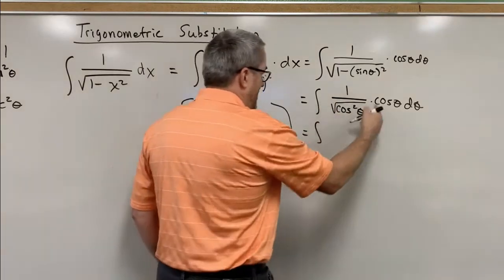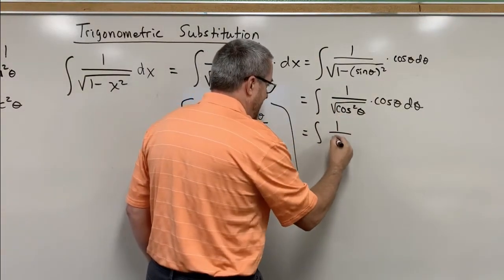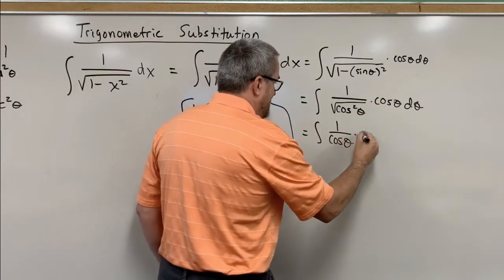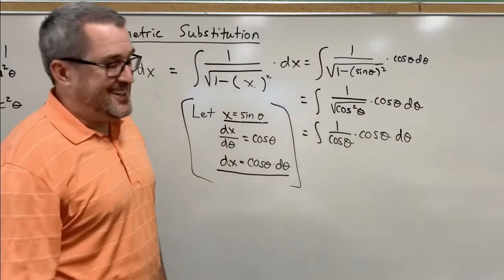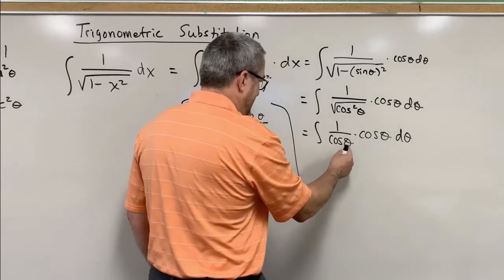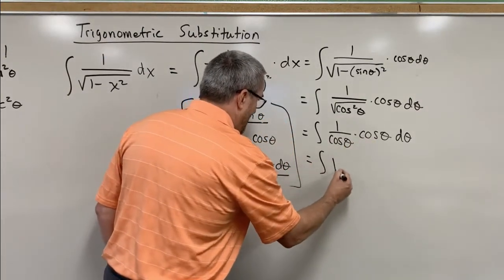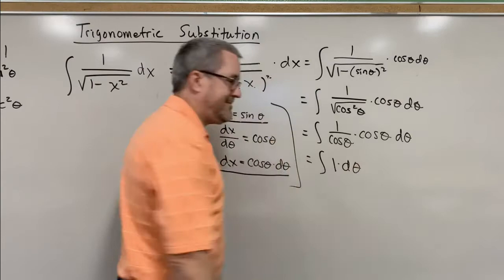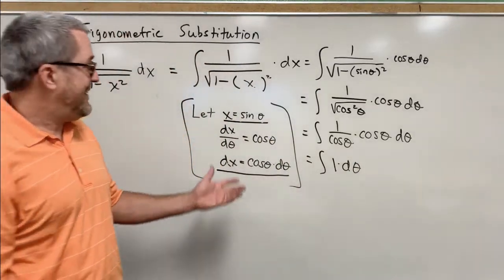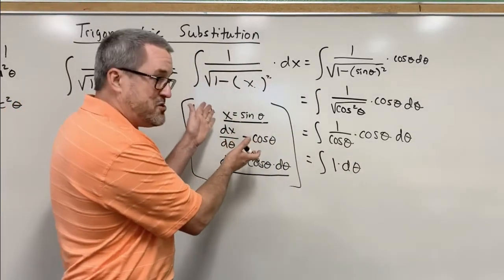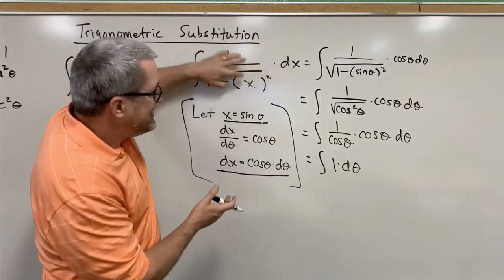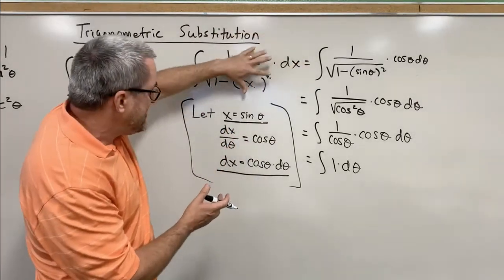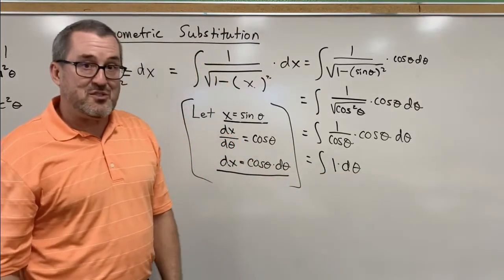And the square root of cosine squared is just cosine. And now I hope you see it. One over cosine theta times cosine of theta is just one. So this is the beautiful thing here. By making this strategic move, our integral goes from this lacking structure, we don't know how to do it, and it becomes the integral of just one dθ.